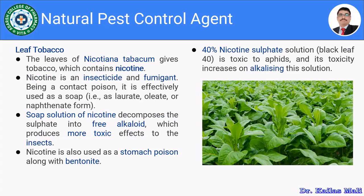Let us move towards the next method — natural pest control agents. There are certain natural pest controlling agents used to control pests in the farm. Examples include neem leaves, products prepared from onion, eucalyptus, and tobacco leaf. The very first one is leaf tobacco. The leaves of Nicotiana tabacum contain nicotine, and nicotine has insecticidal properties. By taking advantage of that, it is possible to use tobacco leaves for controlling pests in the farm.